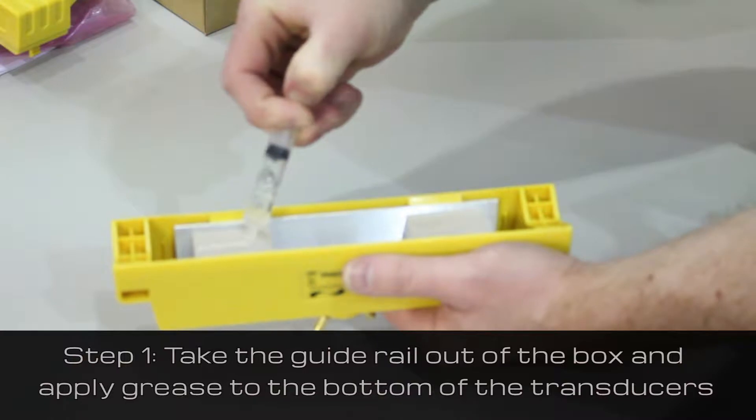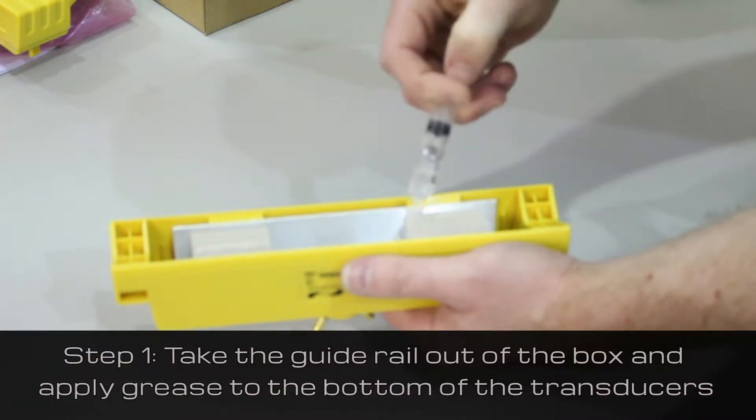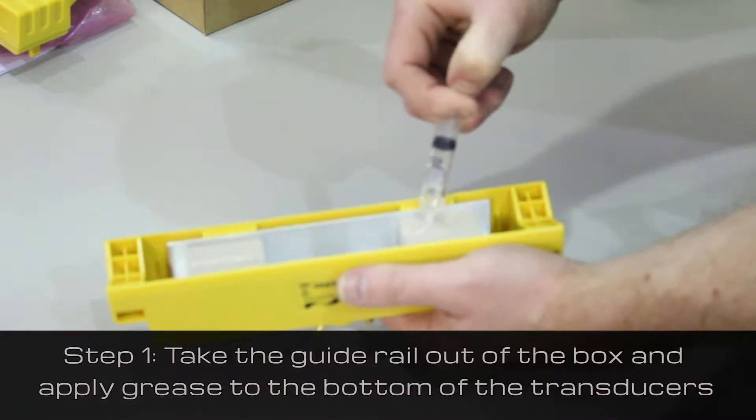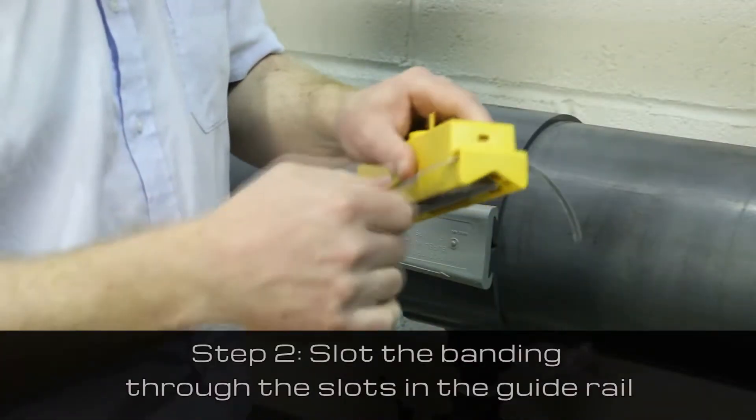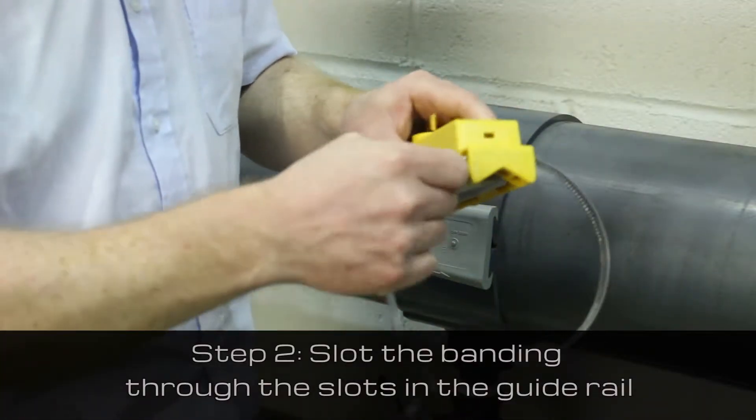First take the guide rail out of the box and apply grease to the transducers. Then slot the provided banding through the slots in the guide rail.